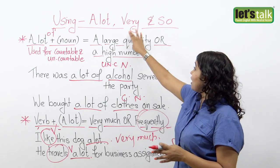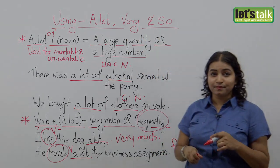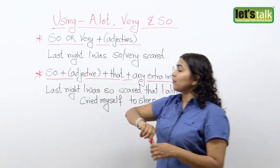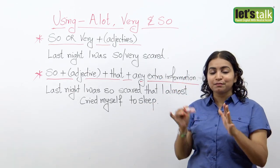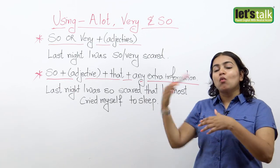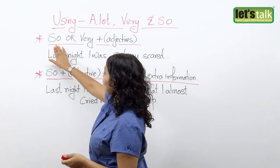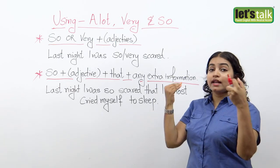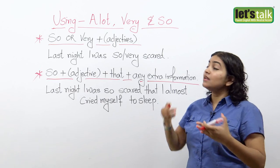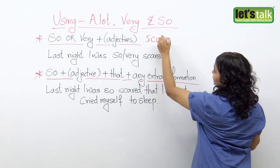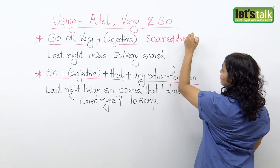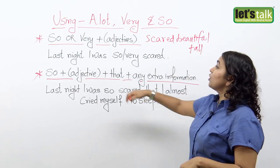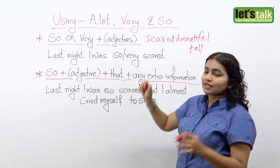Now we're going to deal with the other two words: 'very' and 'so.' These two words in some cases can be used interchangeably, meaning one can be used for the other. You can use 'so' or 'very' followed by an adjective. An adjective is any word which describes a noun — words like 'scared,' 'beautiful,' or 'tall.' You can use 'so' or 'very' before an adjective.